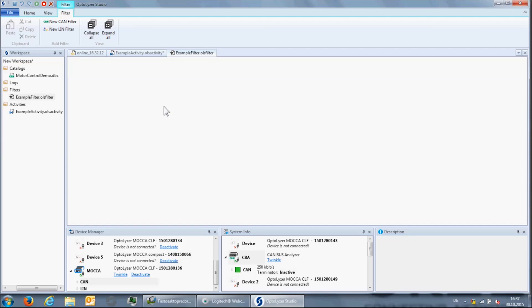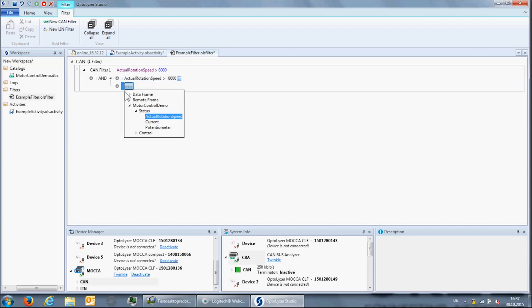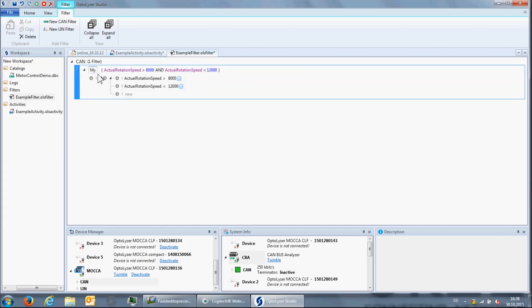In the filter view, we can create a new CAN filter by clicking on the corresponding button. Then, we have to define a Boolean expression that must be true for the messages in the trace view. The other messages are filtered out. For the definition of the Boolean formula, fields of the CAN frames and the signals as defined in the CAN database can be used. Now, we have a filter that selects the messages for which the actual rotation speed is greater than 8,000 revolutions per minute and smaller than 12,000 revolutions per minute. We call this filter MySpeed filter.